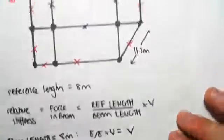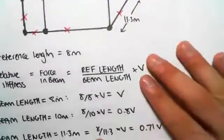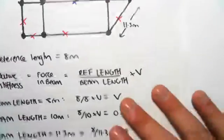The last one we have is this beam over there that's 11.3 meters, so 8 over 11.3 times V gives us 0.71V.